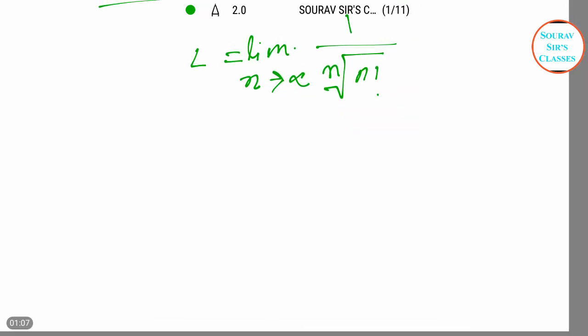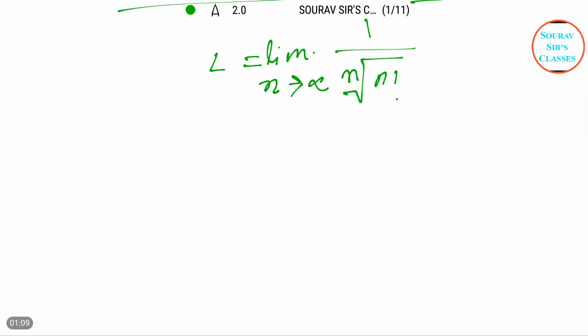Now let's solve it. First we can write it as y equals 1 divided by n root over n factorial. Now if we just take log on both sides, log y equals...